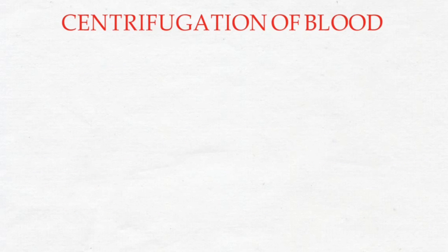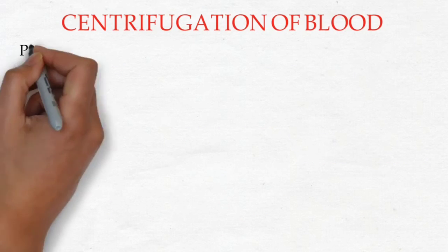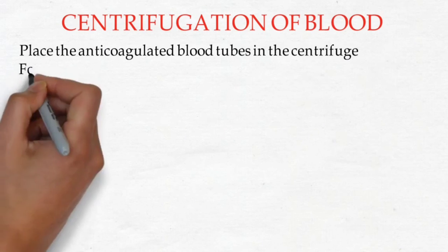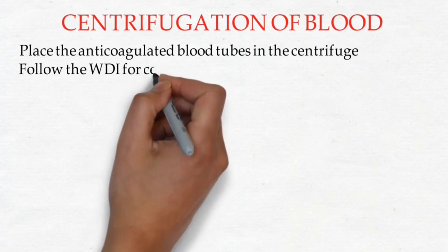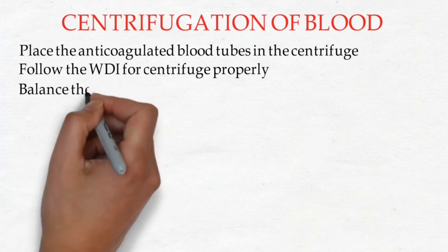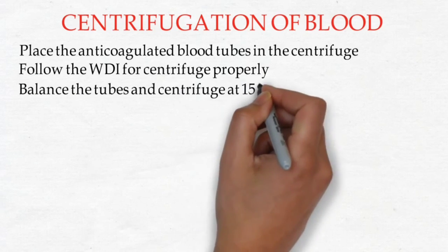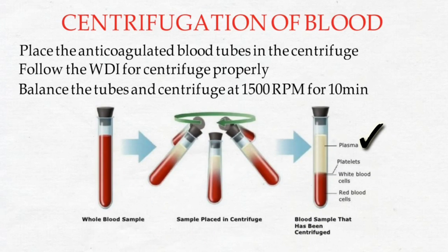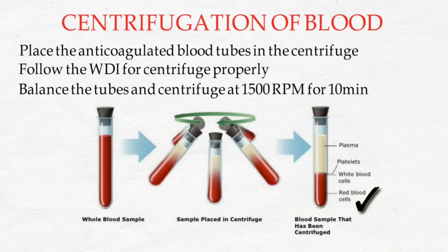Now we will perform centrifugation of blood. Place anticoagulated blood tubes in the centrifuge, follow the workdesk instructions for the centrifuge model, balance the tubes, and centrifuge at 1,500 RPM for 10 minutes. The plasma fraction, being least dense, appears at the top layer. The middle buffy coat contains the majority of platelets and WBCs, and the lowermost part contains the RBCs.